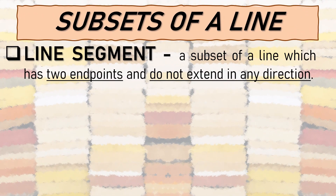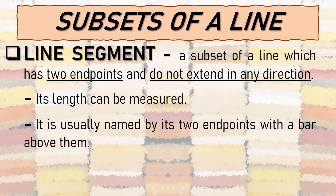Next is the line segment. A line segment is a subset of a line which has two endpoints and does not extend in any direction. Its length can be measured. Unlike a ray which has one arrow and one endpoint, a line segment has two endpoints and no arrows, meaning it cannot extend further. Since it has two endpoints, we can measure its length.